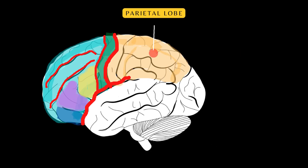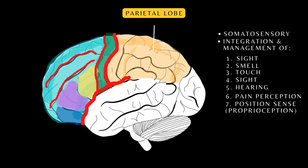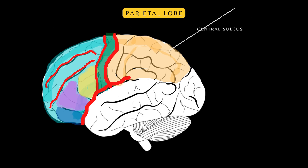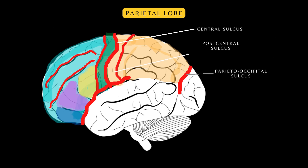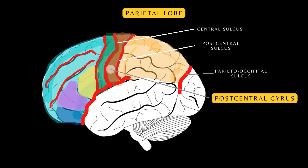Here's the parietal lobe. It is the home of the primary and association somatosensory cortex. Its main function is the processing and integration of sensory stimuli such as pain, touch, and position sense — also called proprioception. Its borders are the central sulcus, the parietal occipital sulcus, and a portion of the sylvian fissure. The sulcus posterior to the central sulcus is the postcentral sulcus.